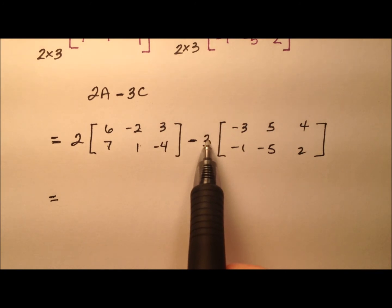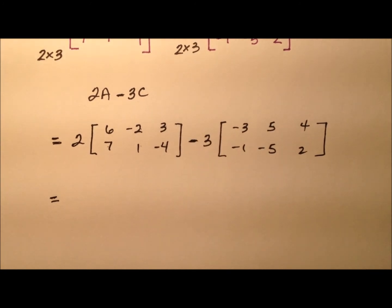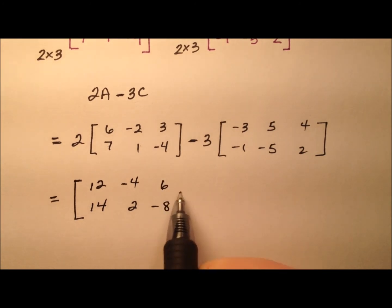If you wanted just to distribute the 3 and then subtract, that would be fine as well. So, let's go ahead and do this 2 first. We have 12 and 14, negative 4 and 2, and looks like 6 and negative 8.